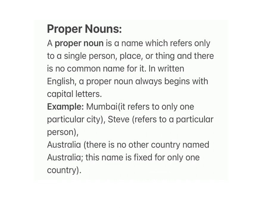Proper nouns: A proper noun is a name which refers only to a single person, place or thing and there is no common name for it. In written English, a proper noun always begins with capital letters. Example: Mumbai — it refers to only one particular city. Steve refers to a particular person.